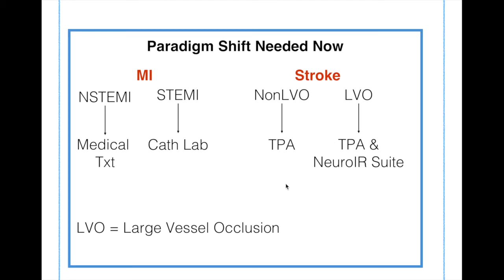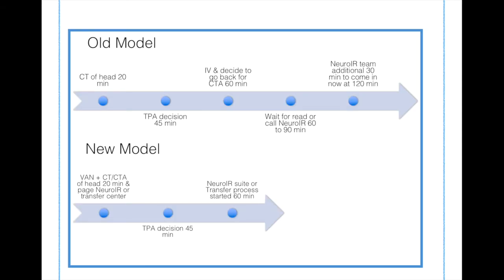How can we tell if there's a large vessel occlusion? You can get a CT angiogram, but should you delay — give TPA, wait an hour, then go back for CTA? No. There has to be a way to identify these patients early, which is what VAN does: identify them early so you can get a CT and CT angiogram right away, activate the neuro IR team, and give TPA as you're going up to the endovascular suite.